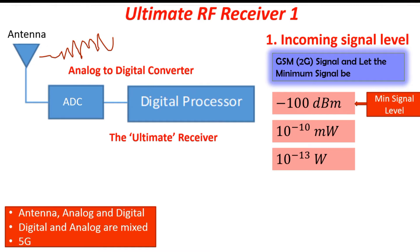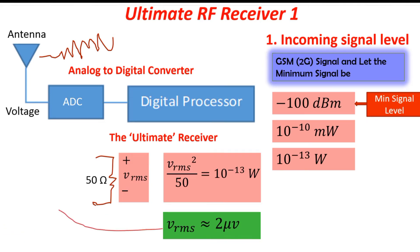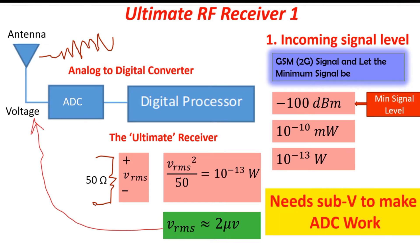So we need to design a system that can handle, at minimum, something less than a picowatt. If we take this power across a 50-ohm resistor — a typical antenna or receiver impedance — voltage squared divided by 50 ohms equals our minimum signal level, giving us approximately 2 microvolts. This is the first challenge: feeding the ADC with voltages in the order of microvolts simply doesn't work. We need voltages in the order of volts or sub-volts to make the ADC function.